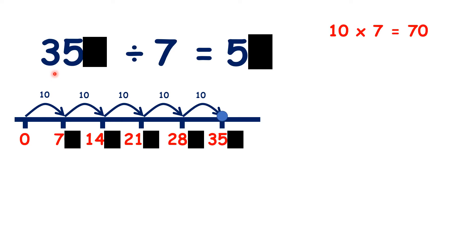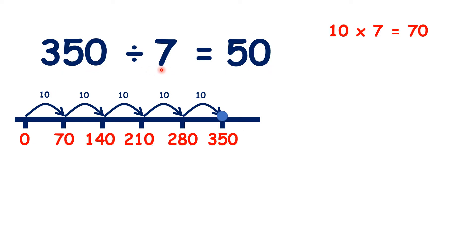And if we know that 35 divided by 7 is 5, we know that 35 tens, so 350 divided by 7 is 5 tens. So 350 divided by 7 is 50.